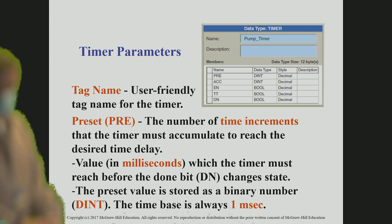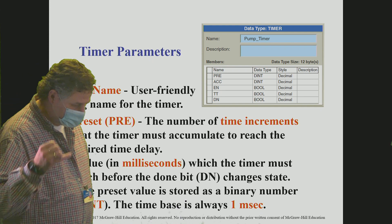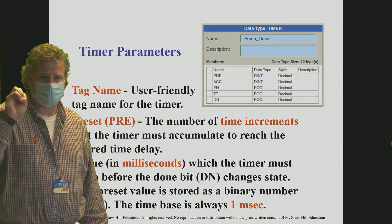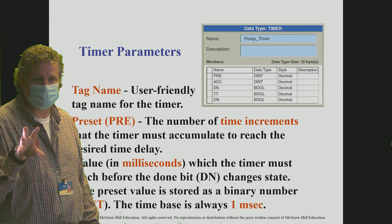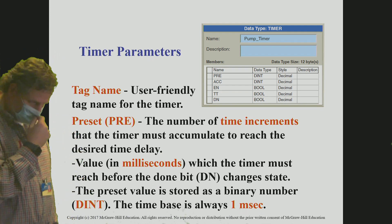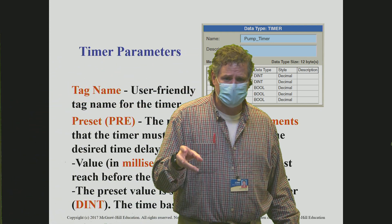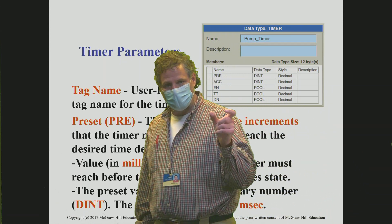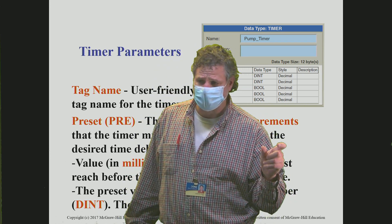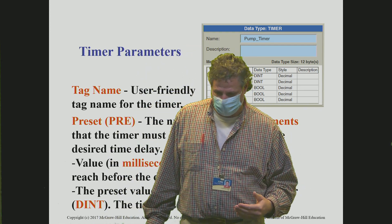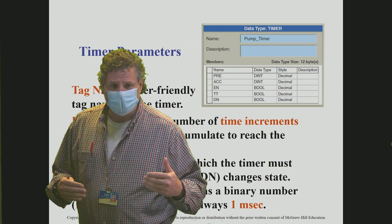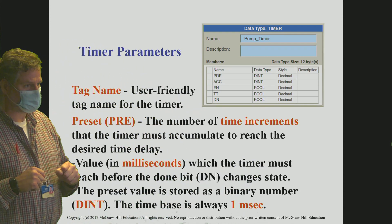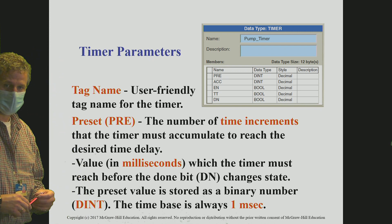Regarding the tag name — the key point about the tag name in a timer application is that the data type has to be defined as a timer. Why is that important? Because if you put a double integer data type in a timer, it's only going to recognize one word. It's not going to time — it's going to give you errors saying wrong data type for this instruction. We've got to make sure when we're using timers that we set that data type to timer. This is a critical path.